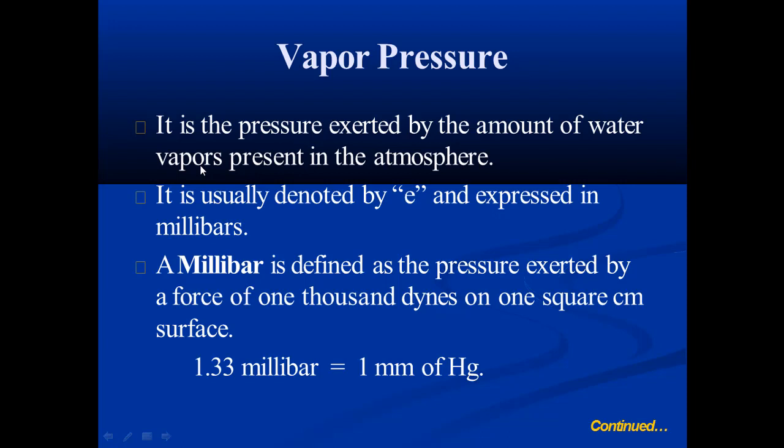Next is vapor pressure. It is the pressure exerted by the amount of water vapors present in the atmosphere. It is usually denoted by 'e' and expressed in millibar. One millibar is the pressure exerted by a force of 1,000 dynes on one square centimeter surface. One point three three millibar is equal to one millimeter of mercury (Hg).